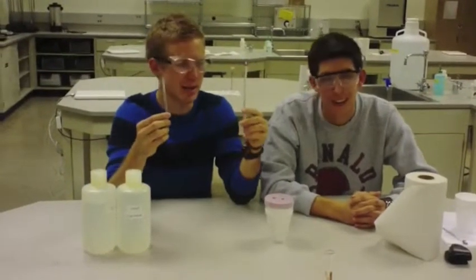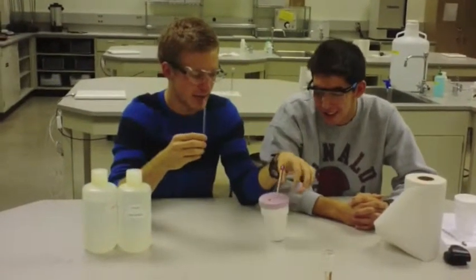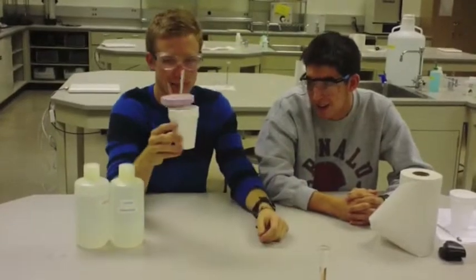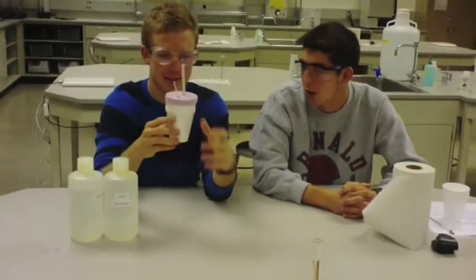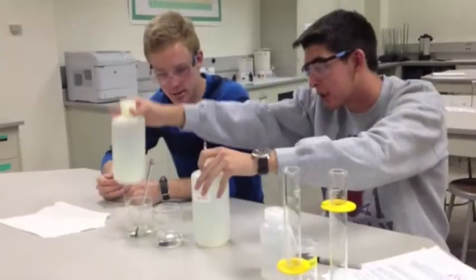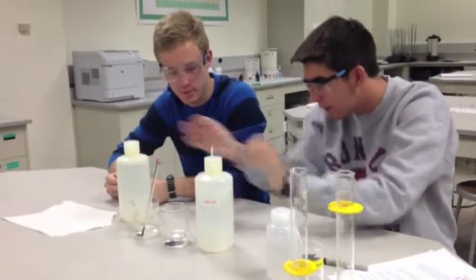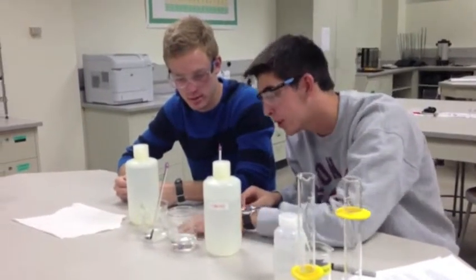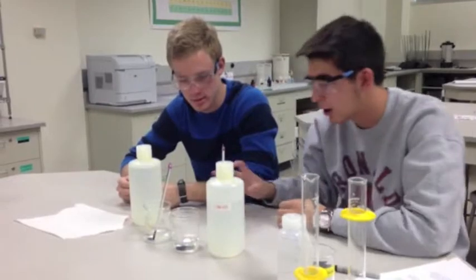And then you take a stir stick and a thermometer and insert. Calorimeter. Hydroxide, hydrochloric acid. Fifteen mils of each. Milliliters. And our calorimeter.